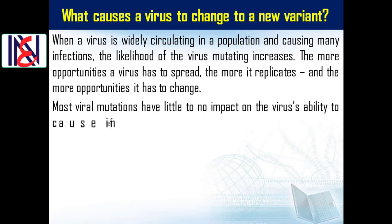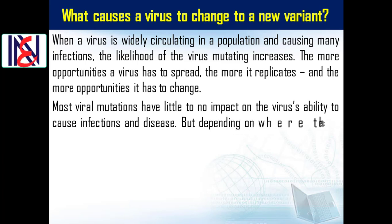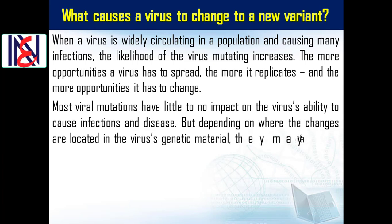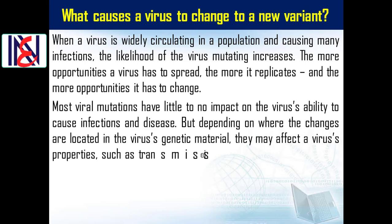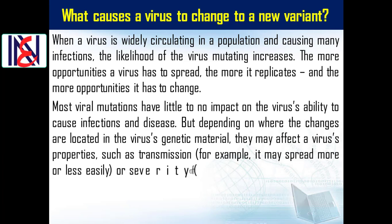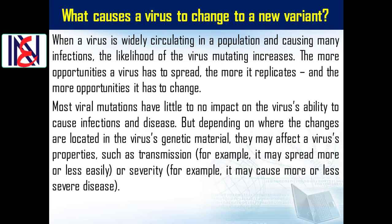Most viral mutations have little to no impact on the virus's ability to cause infections and disease. But depending on where the changes are located in the virus's genetic material, they may affect a virus's properties, such as transmission — for example, it may spread more or less easily — or severity, for example, it may cause more or less severe disease.